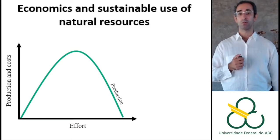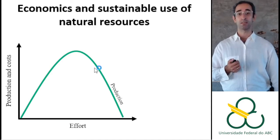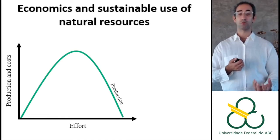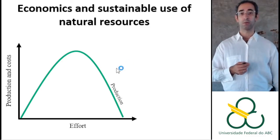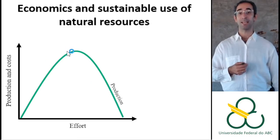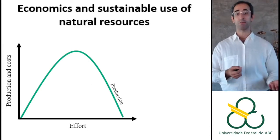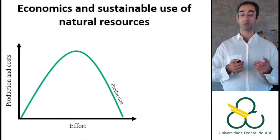If you apply a higher effort than the point of maximum benefit, nature cannot recover — for example, you are getting more wood than the trees are able to grow back, and then in the long term your production will go down. But if you get less than this optimal point, the ecosystems and nature will be okay and able to replenish everything, but you may not be getting the maximum benefit to society that you could get.